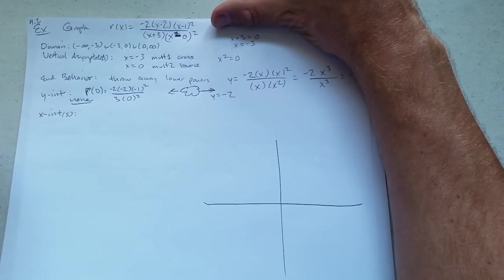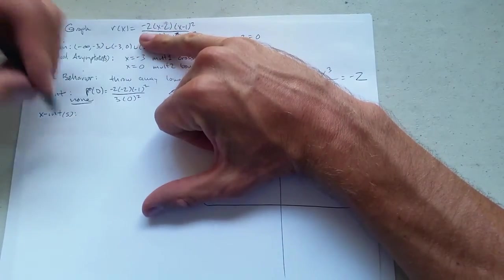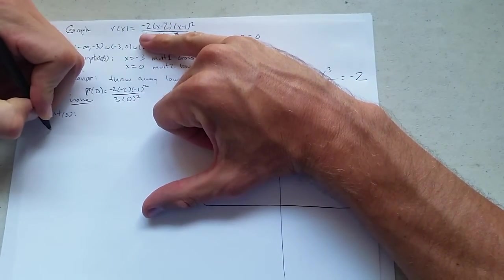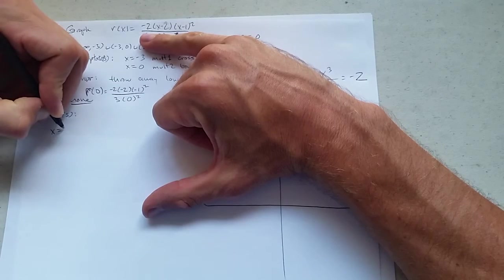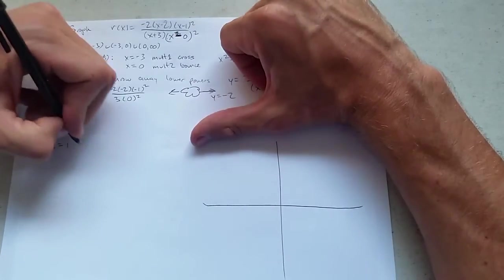I could have seen that earlier if I looked in the domain and saw that 0 is not in there. So there is no y-intercept. How about x-intercepts? Well, where do we look for that? You look in the numerator for x-intercepts. x minus 2 corresponds to x equals positive 2. x minus 1 corresponds to x equals 1.